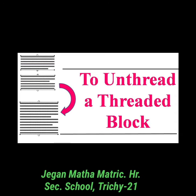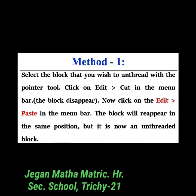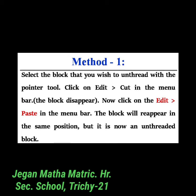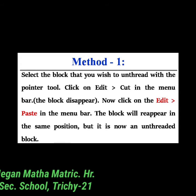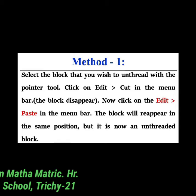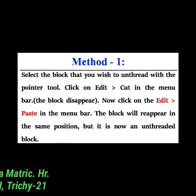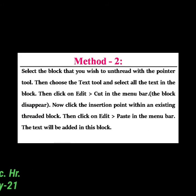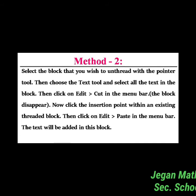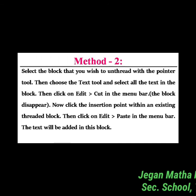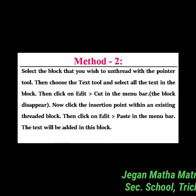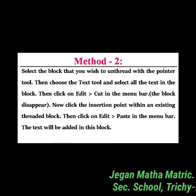To unthread a threaded block, there are two methods. Method one: select the block you want to unthread using the pointer tool, then choose Edit > Cut, then Edit > Paste. The block will reappear in the same position but is now unthreaded. Method two: select the text block with the pointer tool, choose the text tool and select the text, then go to Edit > Cut. Click an insertion point within an existing threaded block, then choose Edit > Paste — the text will be added to that block.